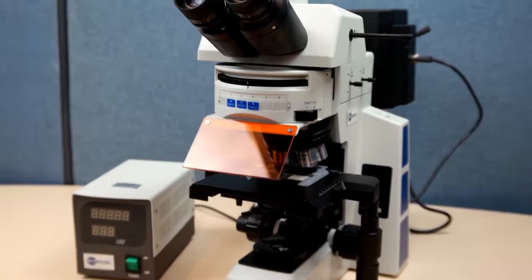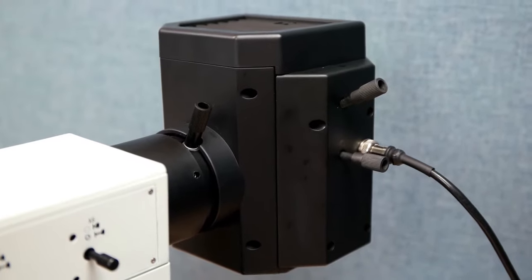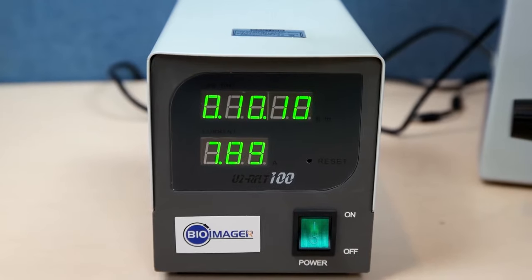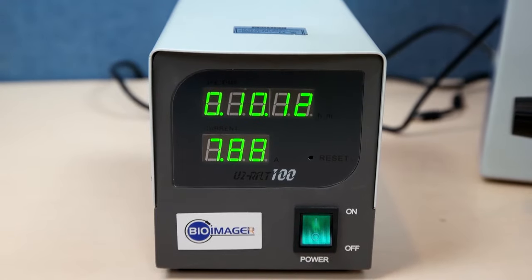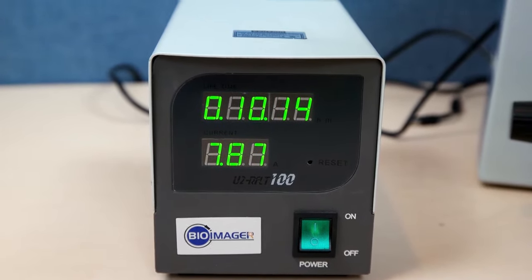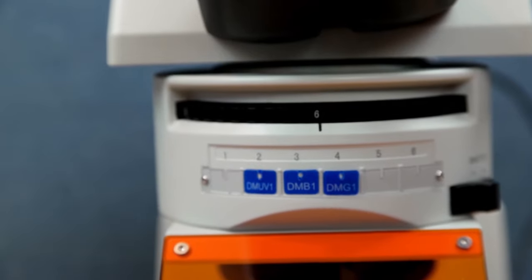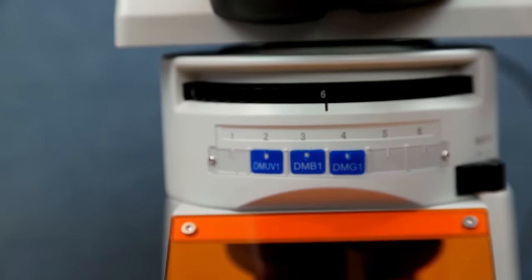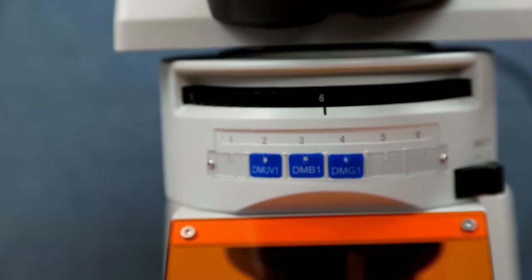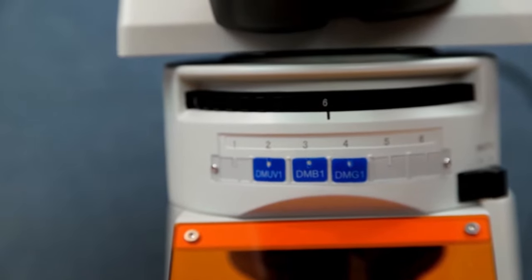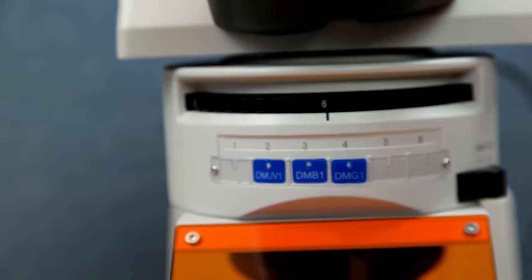For fluorescence imaging, this microscope uses a 100 watt mercury lamp package and includes a light source with timer at the front. It has a 6-spot filter wheel which includes three filters of UV, blue, and green excitation, or blue, green, and red emission.